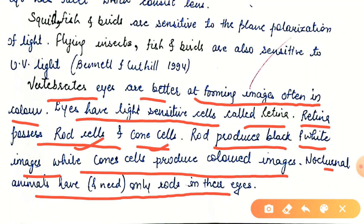Rod cells can only see black and white images, while cone cells — where 'c' stands for colored — help to see colored images. In nocturnal animals there is no need to see colors at night, therefore those animals have only rods in their eyes, which help in seeing black and white images.